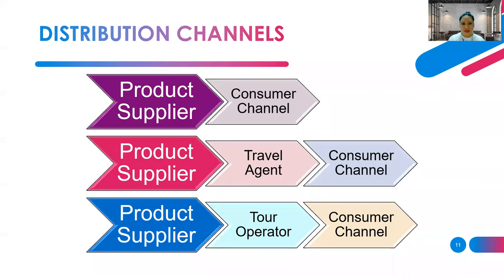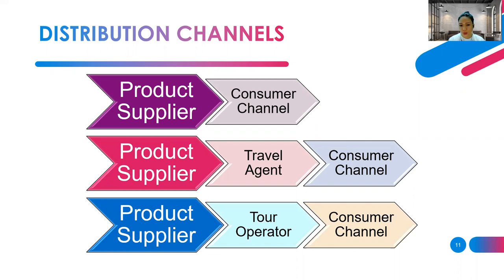Here is a figure of the different product distribution channels. Products may be distributed directly from the product supplier to the consumer, or indirectly through a travel agent before reaching the consumer, or through a tour operator, or from a product supplier to a travel agent and then to the consumer.